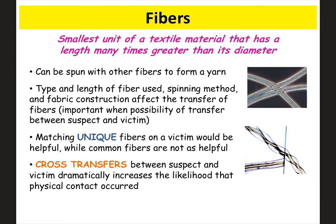Fibers are very similar to hairs in that they are a form of trace evidence commonly found at crime scenes. It would be useful to find unique fibers to match to a specific person, but often only common fibers are found. Where fibers are more helpful is with cross transfers — finding similar fibers between two people can indicate they were in contact or in the same area.